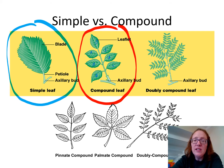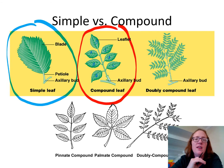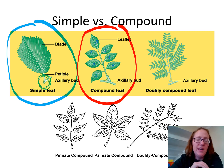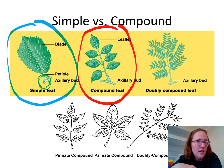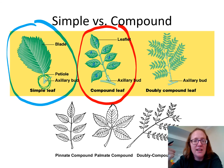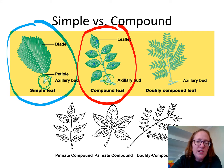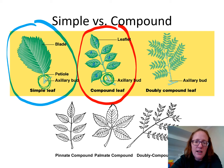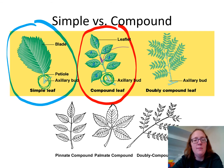The way you can tell the difference between a simple leaf and a compound leaf is the location of the axillary bud. Down at the bottom of the leaf is where the new leaf would form — when the leaf falls off in the fall and a new one sprouts, it comes out of the axillary bud. The axillary bud is located at the bottom of the leaf, so if you're looking at the bottom of one leaflet, you would not see an axillary bud there.